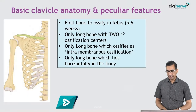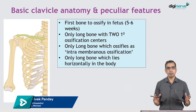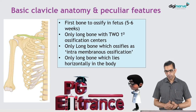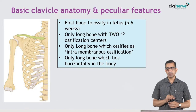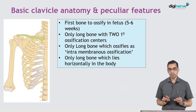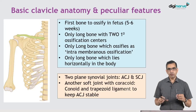If you look at the basic clavicle anatomy and its peculiar features which must be remembered — a couple of them are asked in the PG entrance exams. It is one of the very first bones to ossify in the fetus. It is the only long bone with two primary ossification centers, and the only long bone which ossifies by intramembranous ossification.